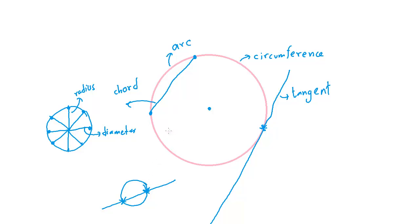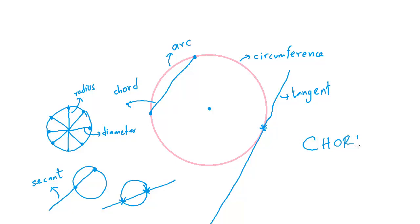If a chord is extended outside the circle, that chord is called a secant. The most important definitions at this moment are chord and tangent, because the angle propositions of circles deal with them. Let's take a look at the first angle proposition.